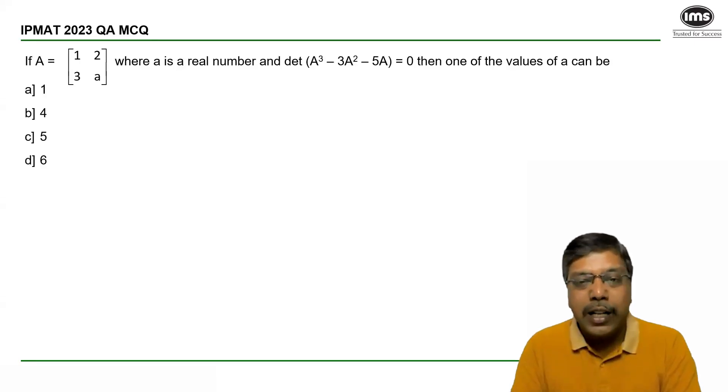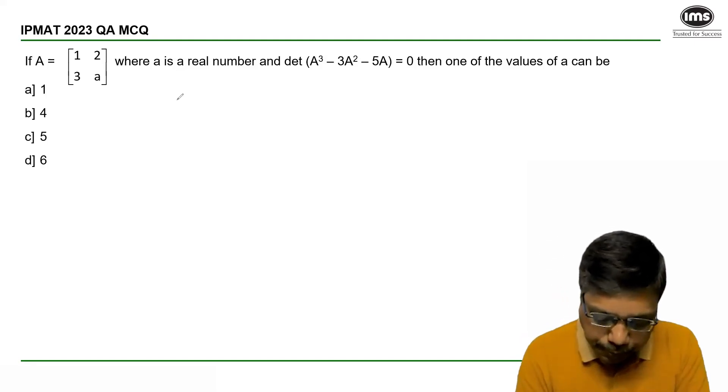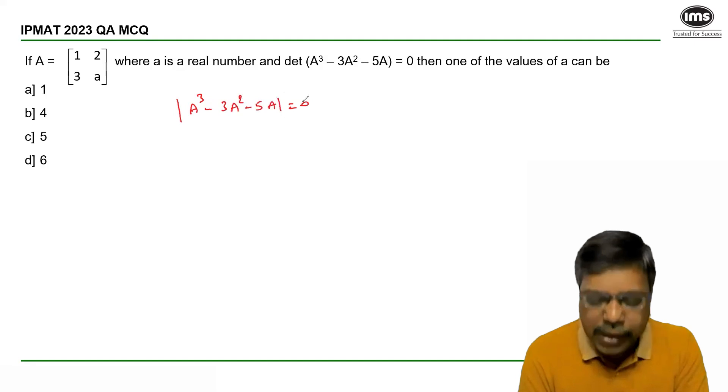If someone is familiar with basic fundamentals of matrices, they can answer this question quite easily. Now we have a 2 by 2 matrix given, and we are asked to calculate the determinant of A³ - 3A² - 5A equal to 0.